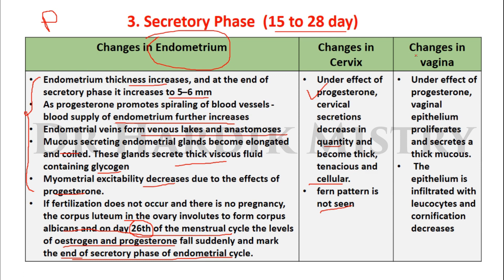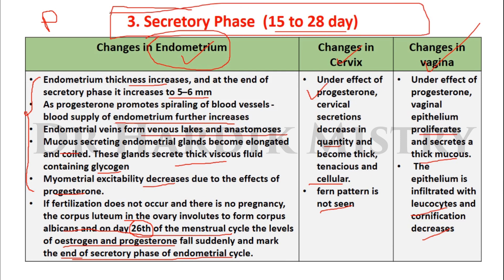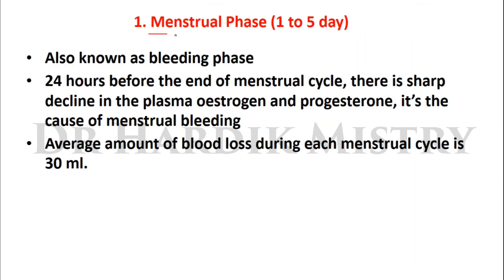The fern pattern in cervical mucus is not seen in the secretory phase. Changes in the vagina during the secretory phase: under the effect of progesterone, vaginal epithelium proliferates and secretes a thick mucus; the epithelium is infiltrated with leukocytes and cornification decreases. Now, the menstrual phase, day 1 to 5, is also known as the bleeding phase.